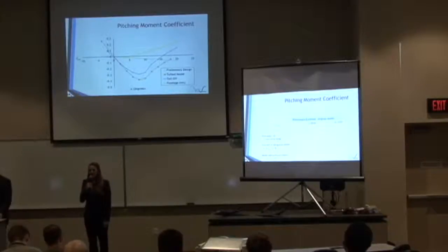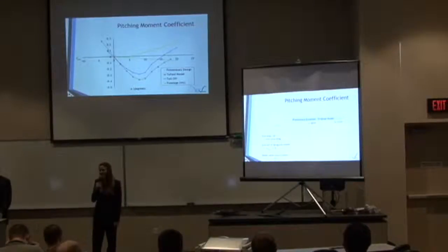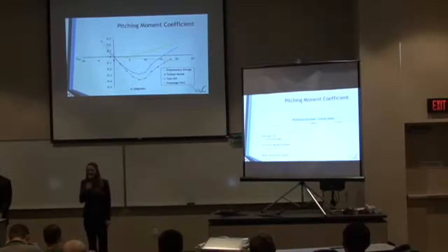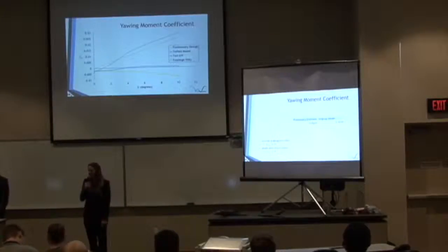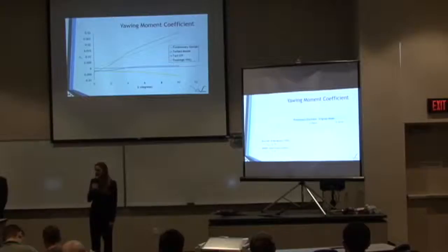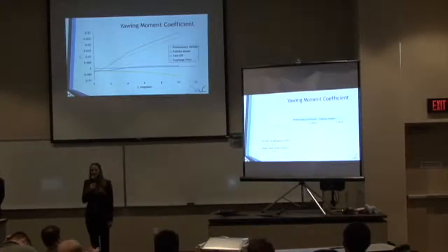For the stability plots, the first is the pitch moment coefficient. Our tested model had a negative slope indicating stability, and also a greater magnitude than our preliminary design, indicating we are overstable in pitch. These values are shown on the secondary screen, and we found our trim angle of attack to be 0 degrees. For our yawing moment coefficient, our model followed the same trend as our preliminary design with a positive slope, indicating stability. The yawing moment coefficient values were 0.042 for the preliminary design and 0.0036 for the model — close values showing our model followed our preliminary design.